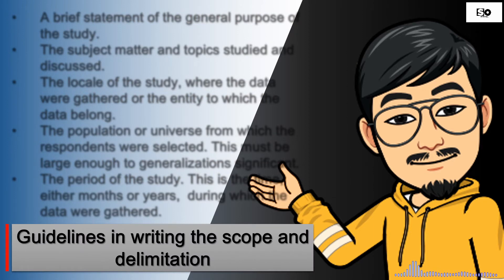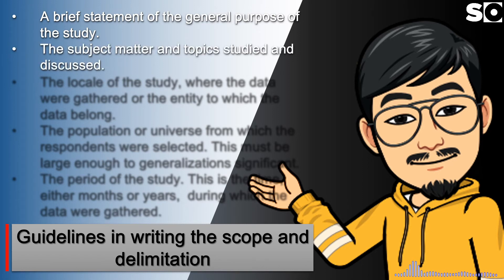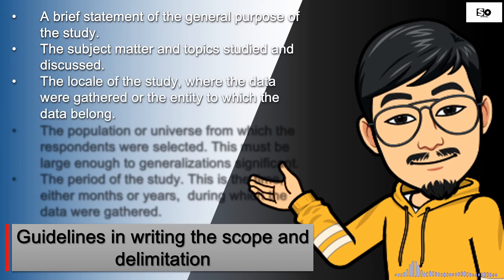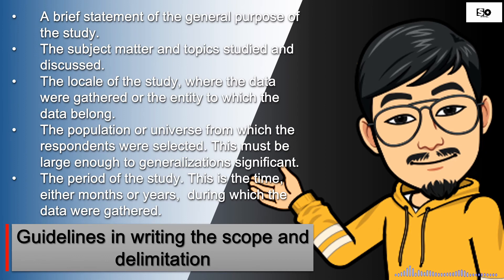Guidelines in writing the scope and delimitation: a brief statement of the general purpose of the study; the subject matter and topic studied and discussed; the locale of the study where the data were gathered or the entity to which the data belonged; the population or universe from which the respondents were selected — this must be large enough to generalize; and the period of the study, which is the time, either months or year, during which the data were gathered.